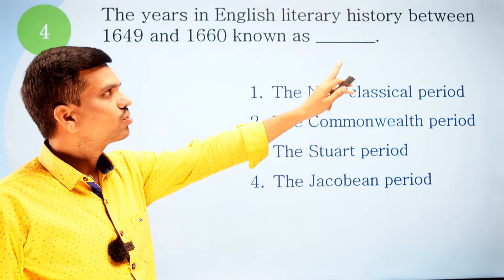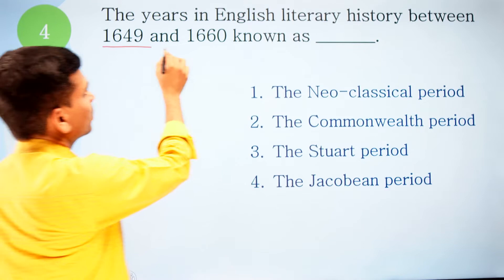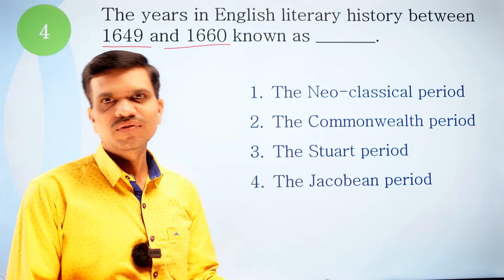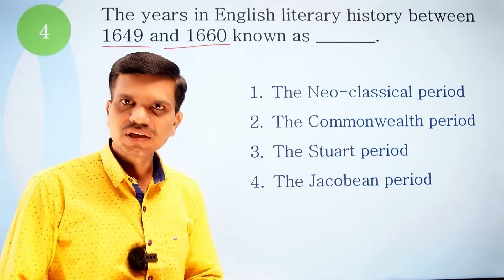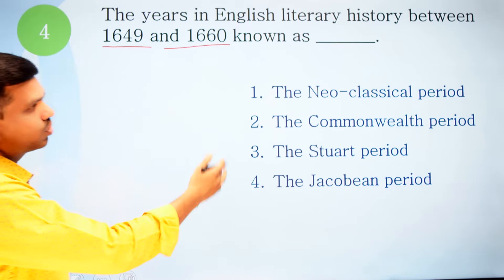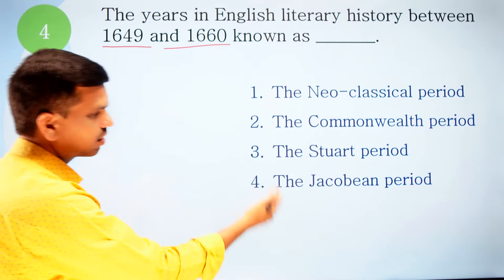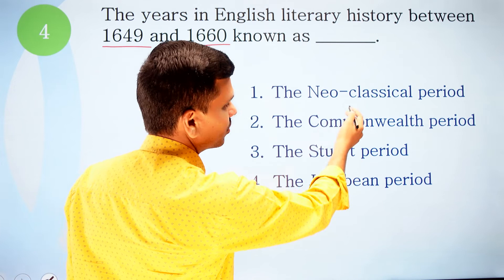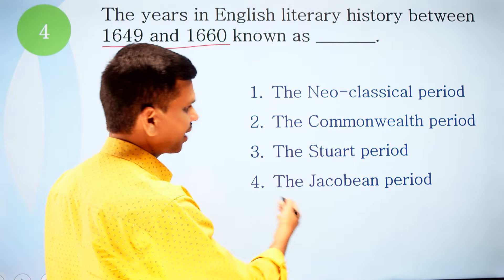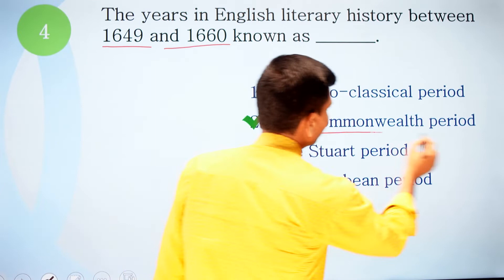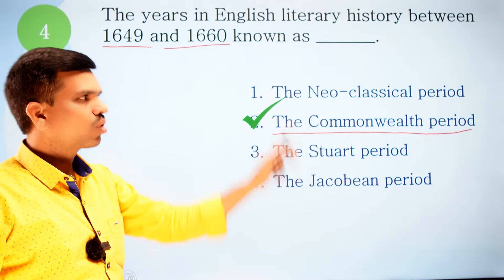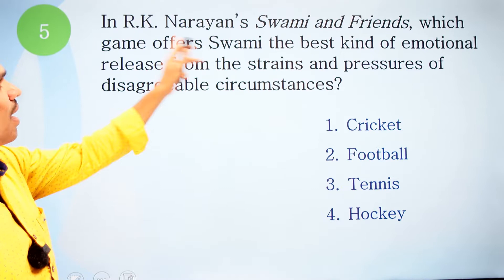Question four: The years in English literary history between 1649 and 1660 are known as which period? The options are: one, Neoclassical period; two, Commonwealth period; three, Stuart period; and four, Jacobean period. You should know the dates of these periods. The correct option is number two, the Commonwealth period. I have made a detailed video on periods of English literary history — go and check that.